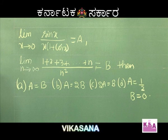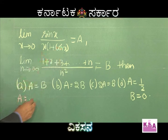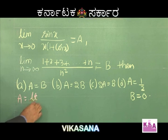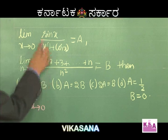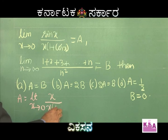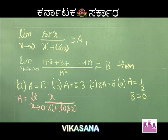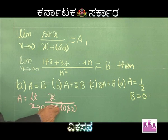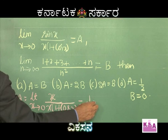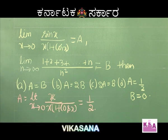Now let's evaluate a. a = limit x→0 of sin(x)/x · (1 + cos(x)). Using the shortcut, sin(x) becomes x, so this becomes x/x · (1 + cos(x)). The x/x cancels. Putting x = 0 gives 1/(1 + cos(0)) = 1/(1 + 1) = 1/2.